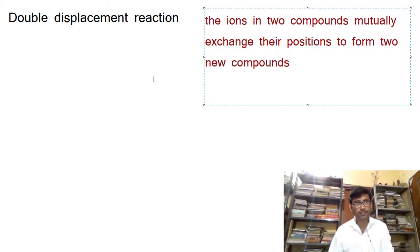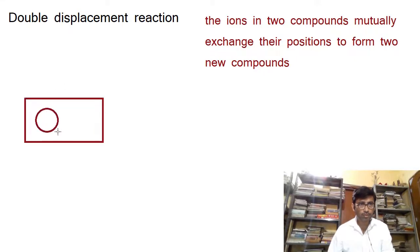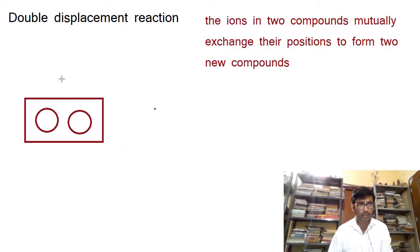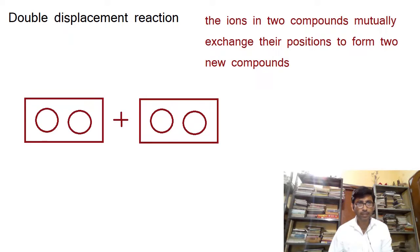We shall just take a look at an illustration to understand this. Suppose we have a substance here which is made up of two ions, and this is reacting with another substance which is also made up of two ions. Maybe these two ions are metallic ions and these two ions are non-metallic ions.